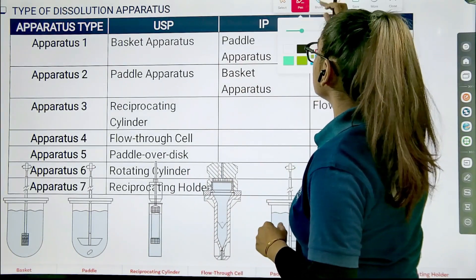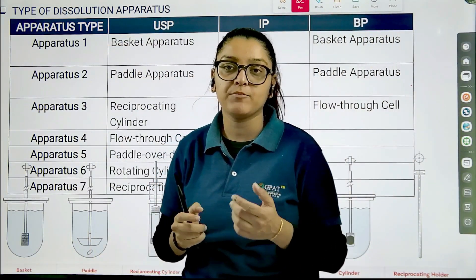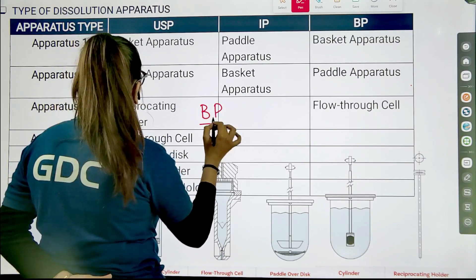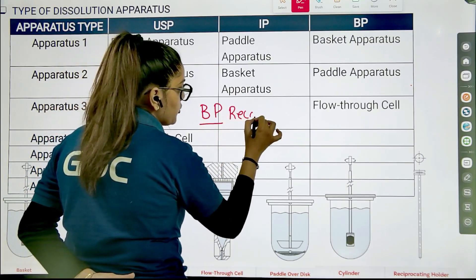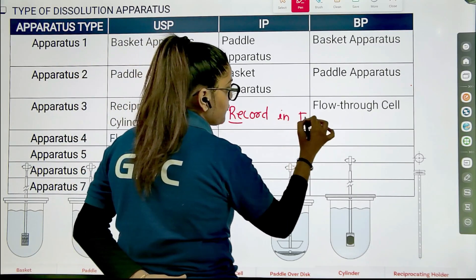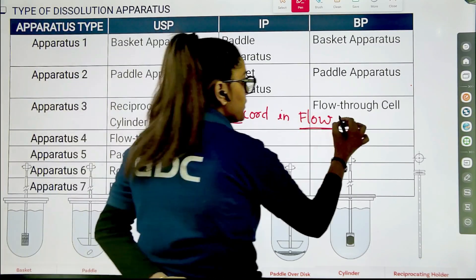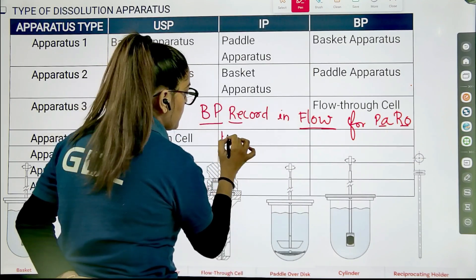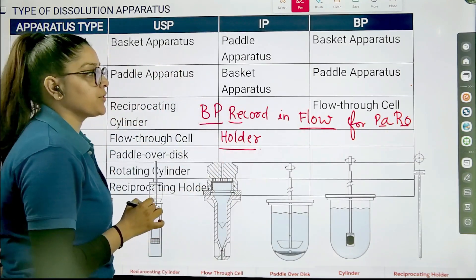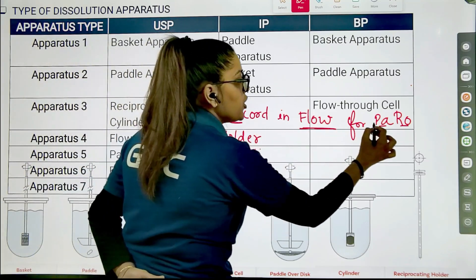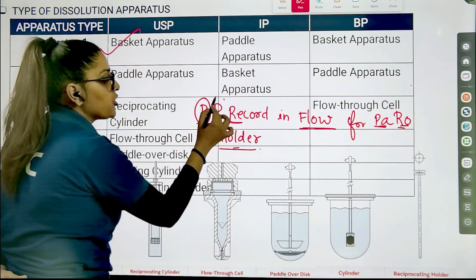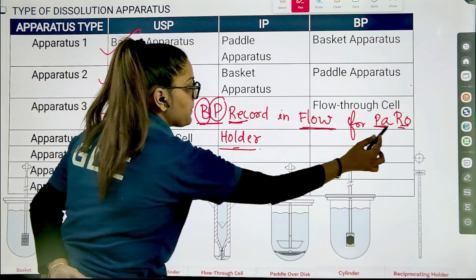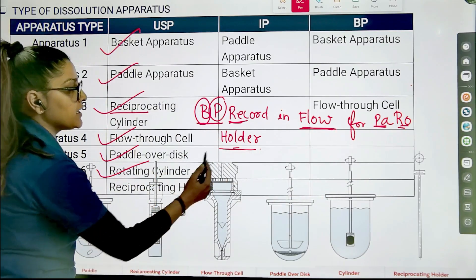For the USP, learning the 7 apparatus can be quite tricky for some of you, so I have made a mnemonic: just remember 'BP Record In Flow For Paro Holder'. From B it will be the Basket, for P it will be Paddle, for Record it will be Reciprocating Cylinder, for Flow it will be Flow Through Cell, for Paro it will be Paddle Over Disc, for Row it will be Rotating Cylinder, and for Holder it will be Reciprocating Holder.